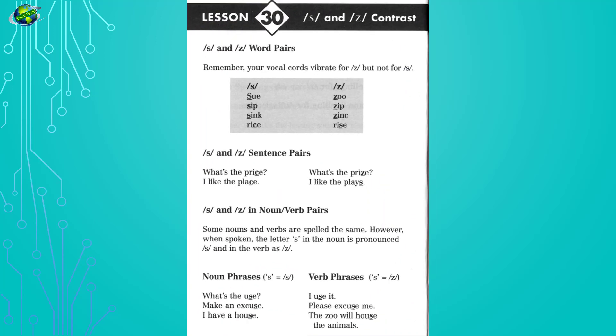Lesson 30: S and Z contrast. Listen and repeat. Sue, zoo, sip, zip, sink, zinc, rice, rise.